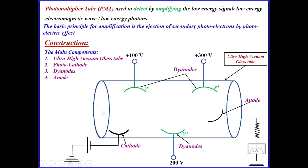When a low energy electromagnetic radiation is incident on the cathode, due to the photoelectric effect an electron is ejected from the cathode. One important thing: this cathode is made of a metal which has a very low work function, so even low energy electromagnetic radiation can easily eject one electron. This is called ejection of a secondary electron.